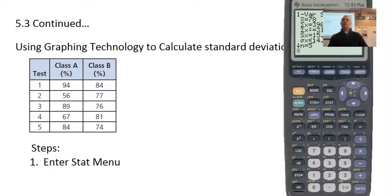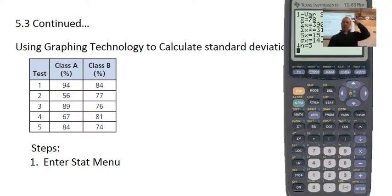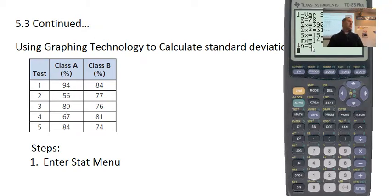Here's the other sigma — the other standard deviation. We're not going to use that number; we use the one at the bottom. But what else does this tell you? It gives you X-bar equals 78 — that's the mean, and the calculator calculates it for you. You also have the sum of all the numbers, the sum of all numbers squared, and N equals 5, which tells you there were five data items in your list. If N is wrong, you may have missed something when entering your data.